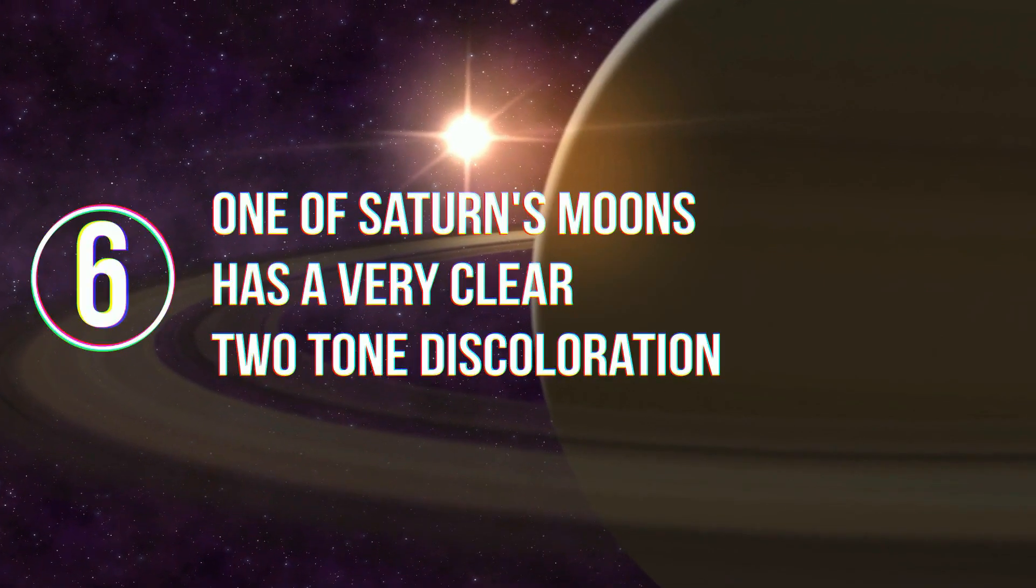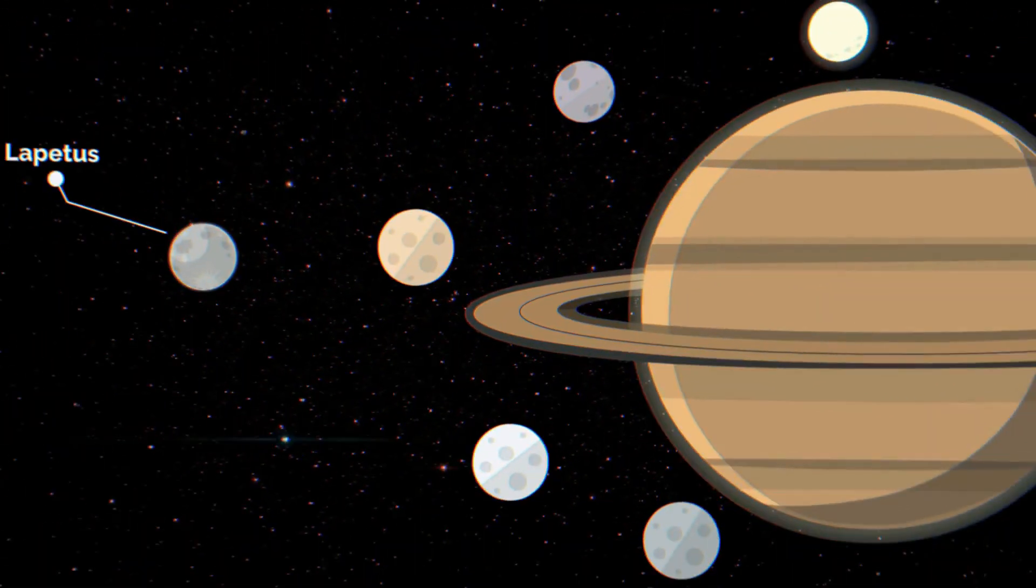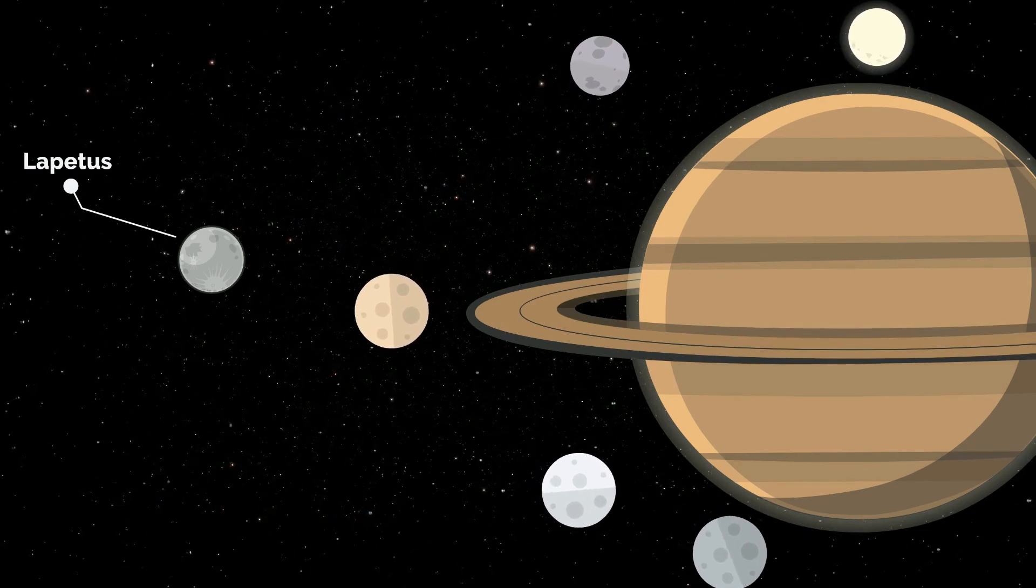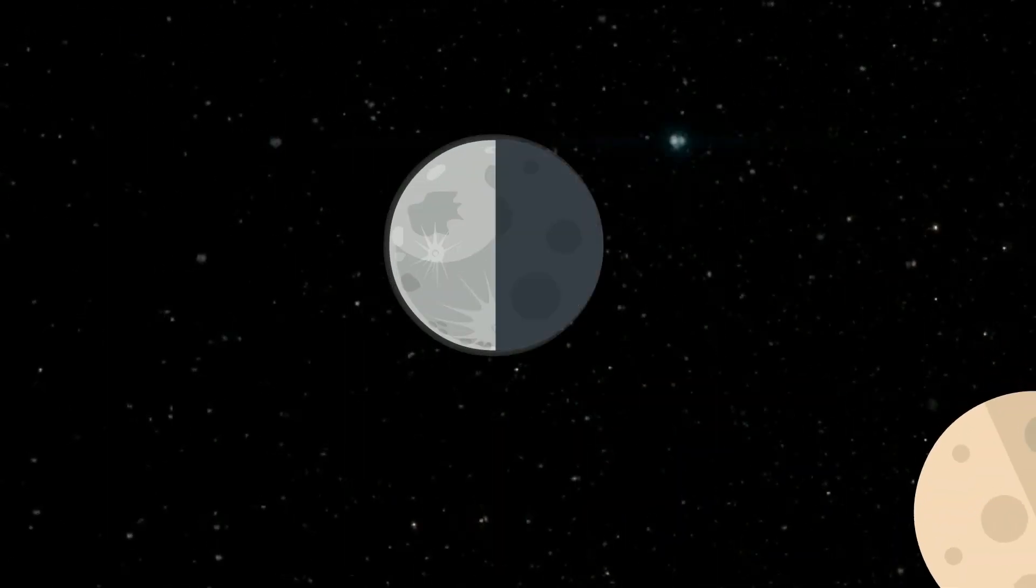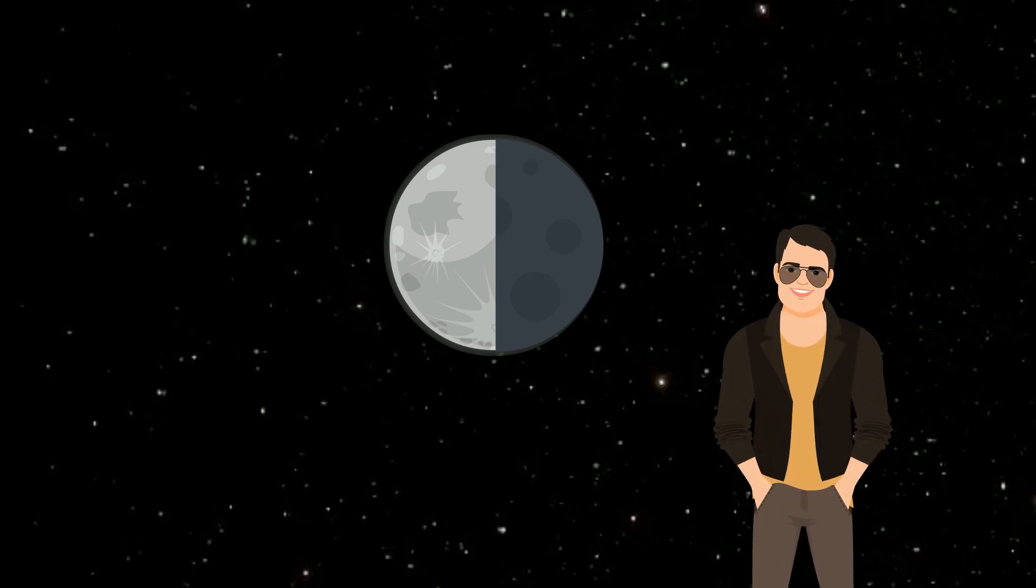Number 6. One of Saturn's moons has a very clear two-tone discoloration. Iapetus is one of Saturn's 62 moons and is a crazy celestial body. One of its sides is perpetually darker than the other. This is not a common occurrence with the moons. In fact, it is unique to Iapetus. Why is this so?